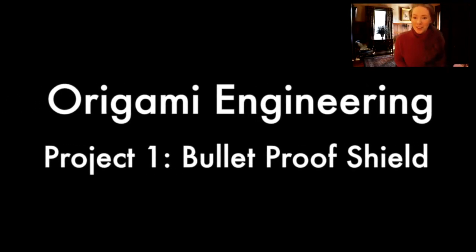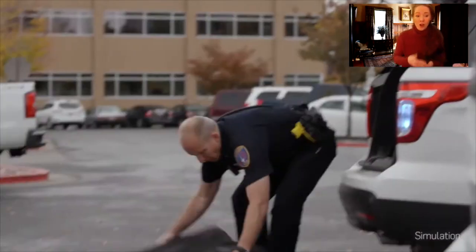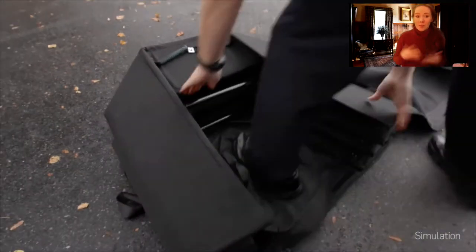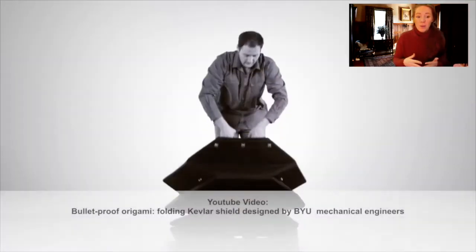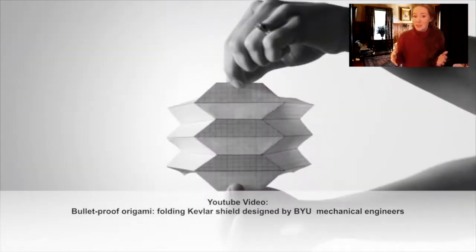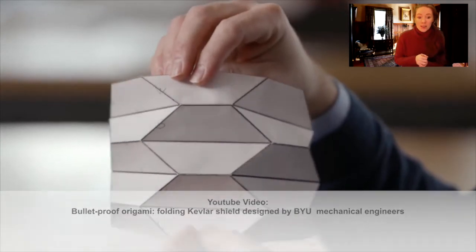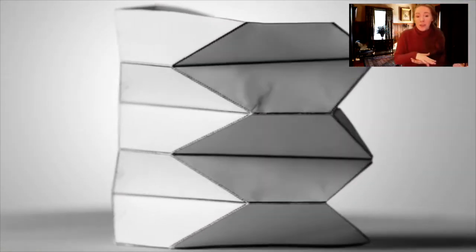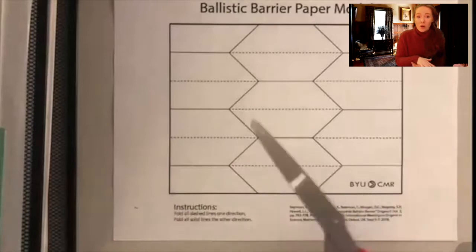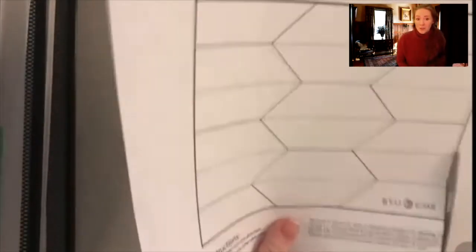Our first project that we're going to be doing is the bulletproof shield. Law enforcement is using these folding origami principles to come up with a really fast collapsing and expanding shield that's actually out of bulletproof material. This is beneficial because those folds allow it to be really movable, transportable, and also come up and go back down really quick for an emergency situation.